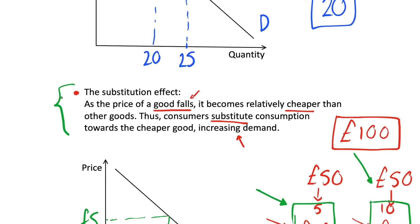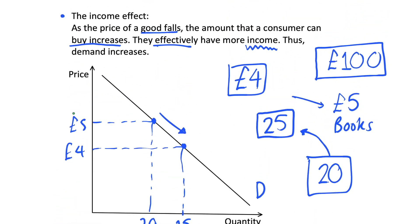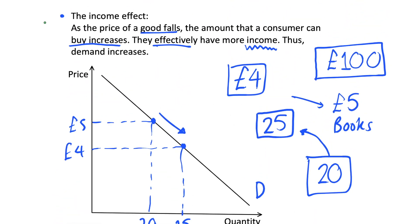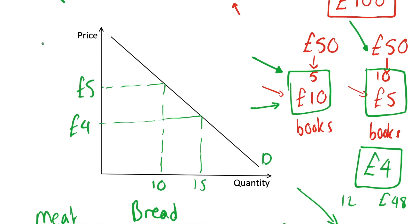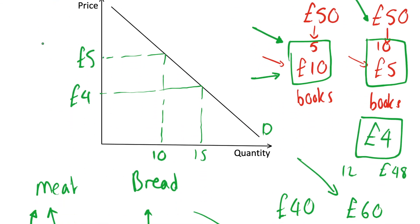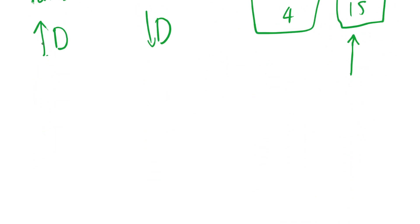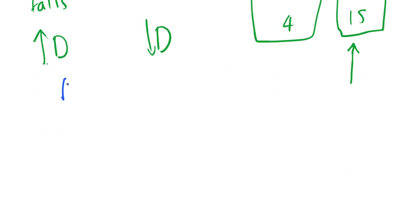To recap: the substitution effect — as the price of a good falls it becomes relatively cheaper than other goods, so we tend to buy more of it. The income effect — as the price of a good falls, the pure amount a consumer can buy increases so they effectively have more income and demand increases. In both cases we have a negative relationship between price and quantity demanded, giving us a downward sloping demand curve. Please drop a like if this was useful, subscribe for more economics content, and check out the playlist for more introductory economics.